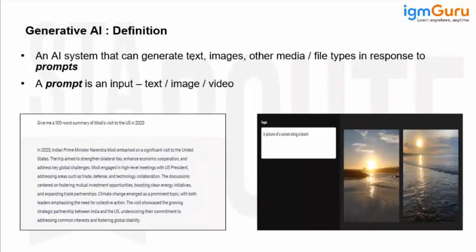So if I talk about generative AI — generative AI is a type of AI which can generate text data, image data, or other types of media such as video and audio, in response to a prompt.